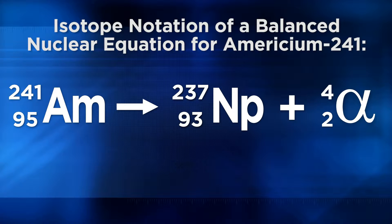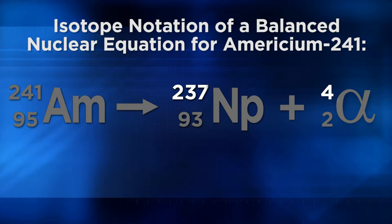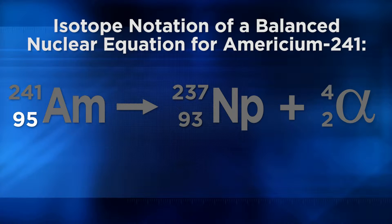What's the mass number of this new neptunium atom? Since the atom lost four nuclear particles — two protons and two neutrons — subtract 4 from americium's mass number: 241 minus 4 equals 237. So write 237 as the mass number of the daughter nuclide, neptunium. You have now completed your first nuclear equation. Notice how the mass numbers on the right side add up to 241, equal to the left side, and the atomic numbers total 95 on both sides — conservation of matter applies.